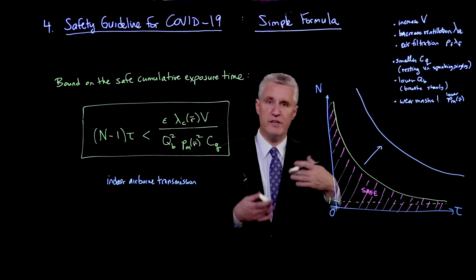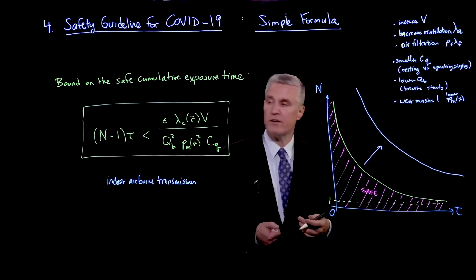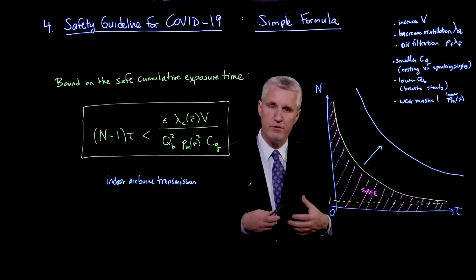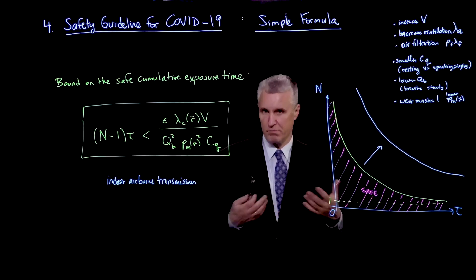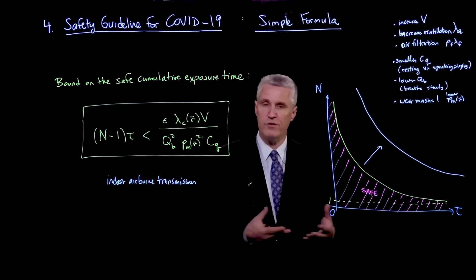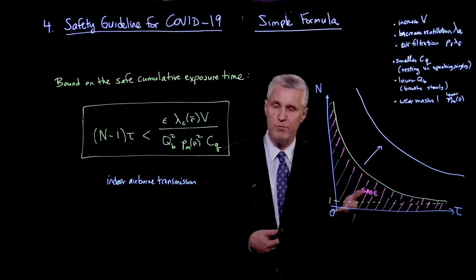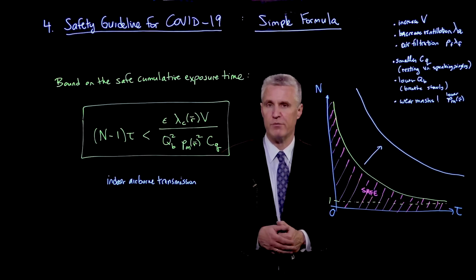And so those are some of the key scalings that we can understand. And just simply by plugging into a form like this, we get a sense of how different mitigation strategies can be compared, and also how different types of rooms can be compared, in terms of the occupancy time and the number of people that could be allowed as a maximum occupancy.